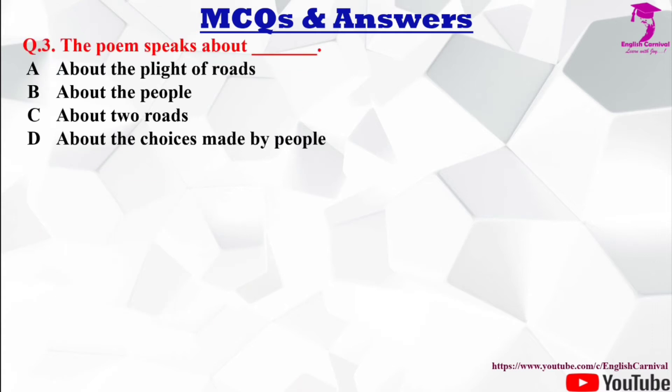Question number 3: The poem speaks about ___. Options: A) the plight of roads, B) about the people, C) about two roads, D) about the choices made by people. The correct answer is D — this poem talks about the choices made by people.